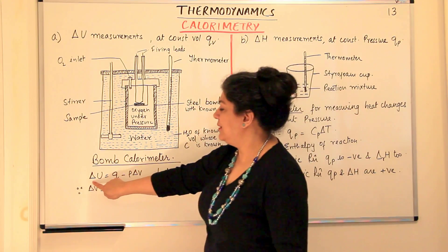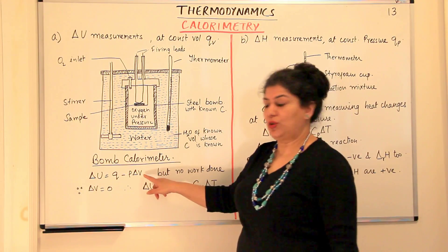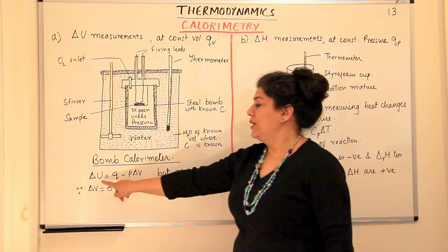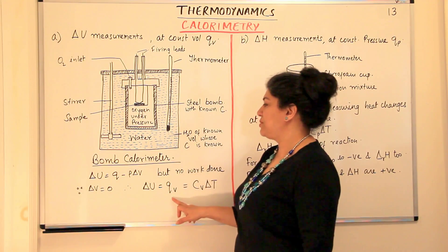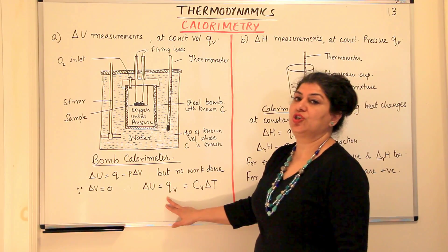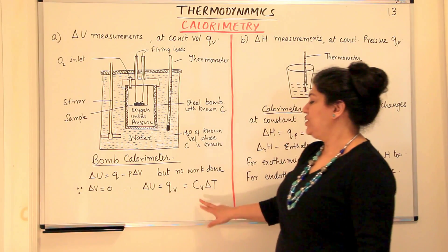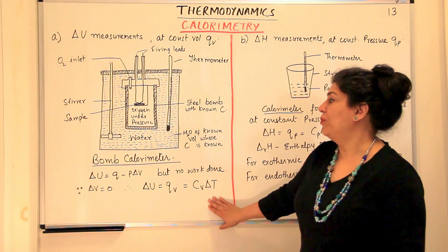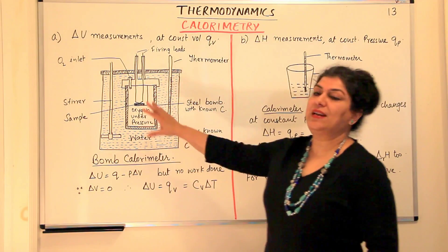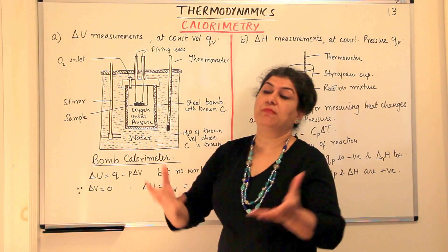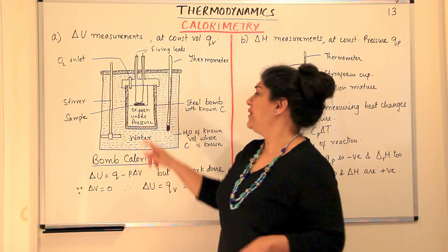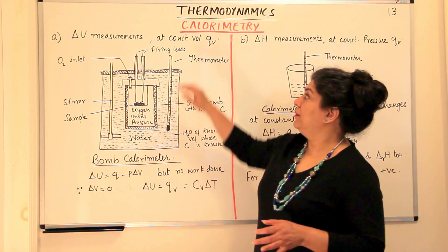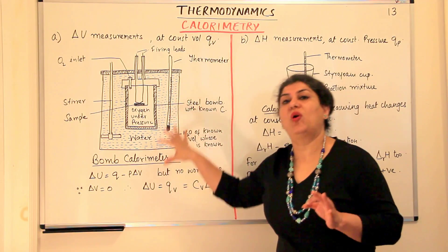Using the first law of thermodynamics, delta U = Q − P·delta V. Since the reaction takes place at constant volume, delta V = 0. Therefore the change in internal energy equals the heat exchanged at constant volume: delta U = QV = CV·delta T, where C is the heat capacity and delta T is the change in temperature. Using this formula and knowing all the values, we can calculate how much heat was given out or absorbed by the measured mass of sample burned with oxygen.